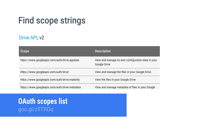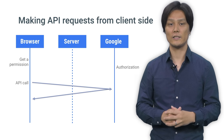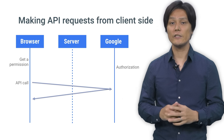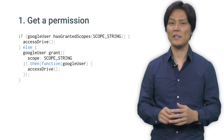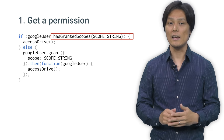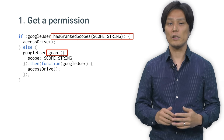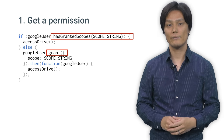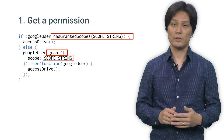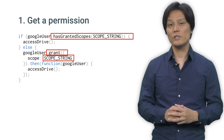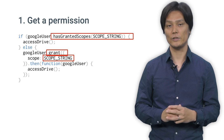You can make requests from the client or from the server. Let's look at the client first. There are two steps. You first need to get a permission from the user. Check if the user has already granted access to the API using has-granted-scopes. Otherwise, request a permission by calling grant. Use the scope strings you obtained in the previous step. Once the permission is granted, you can make API calls on behalf of the user.